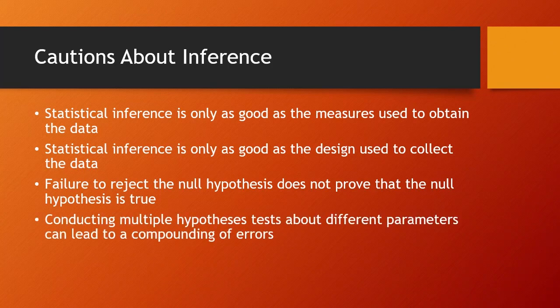And a final caution. If we conduct multiple hypotheses tests about different parameters, that can lead to a compounding of errors. You might wonder about confidence intervals because we first constructed those by testing multiple hypotheses, but note that those were about a single parameter, the population mean. If we do tests about multiple population means or the means for multiple variables, and we do each of those tests with a type 1 error rate of 5%, the error rate for our entire study can go up beyond 5%, so we need to be careful of that and cautious about which hypotheses we choose to test.